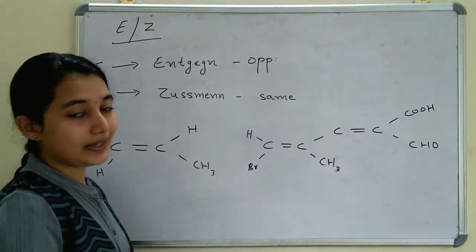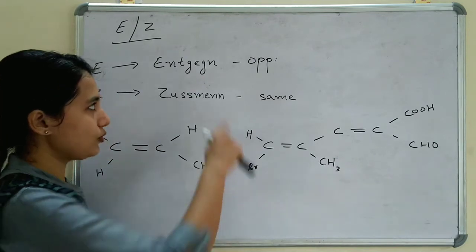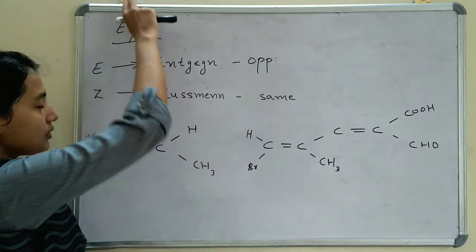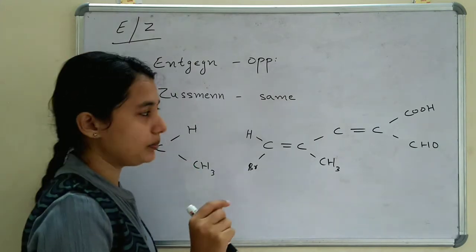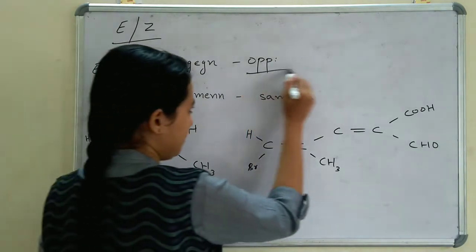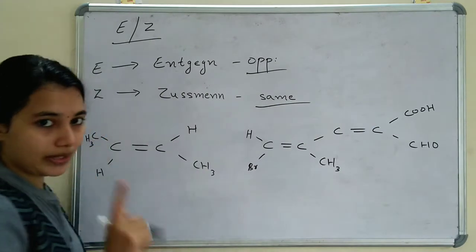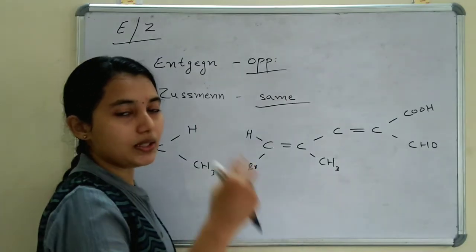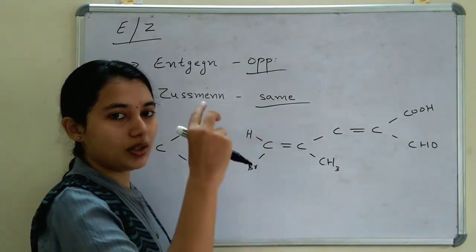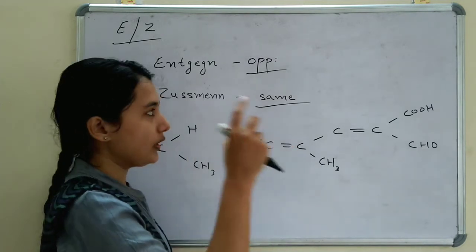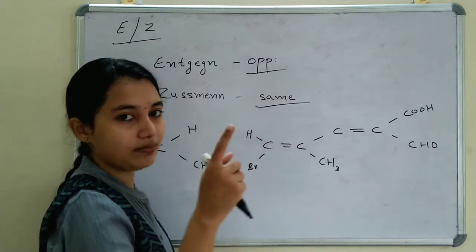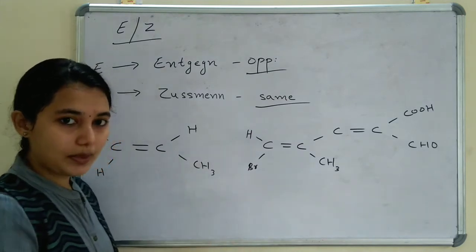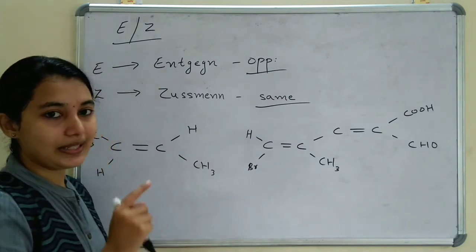Now we look at E and Z nomenclature. E stands for entgegen (opposite side) and Z stands for zusammen (same side). If the higher atomic number substituents on each carbon of the double bond are on opposite sides, it is E configuration. If they are on the same side, it is Z configuration.